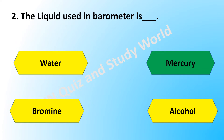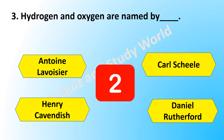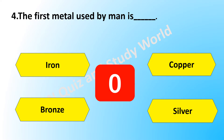The elements hydrogen and oxygen were named by — is it Antoine Lavoisier, Carl Scheele, Henry Cavendish, or Daniel Rutherford? The answer is Antoine Lavoisier. The first metal used by man is — is it iron, copper, bronze, or silver?